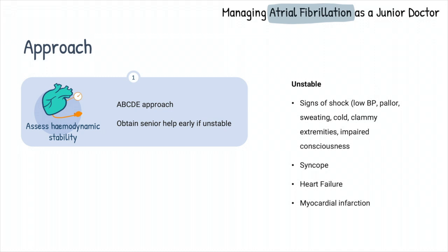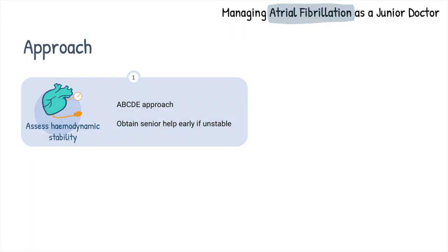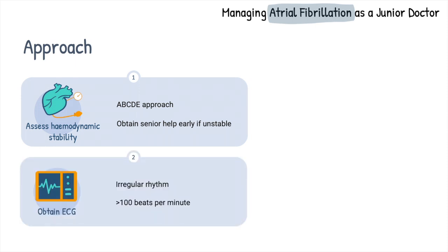clammy extremities, confusion or impaired consciousness, syncope, heart failure or myocardial infarction — then perform steps to stabilize the patient and obtain senior help early. Once the patient is stable, confirm the diagnosis with an ECG, or if an ECG is available, look at the ECG for signs of ischemia.